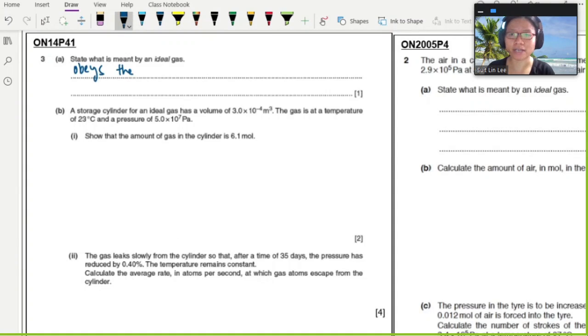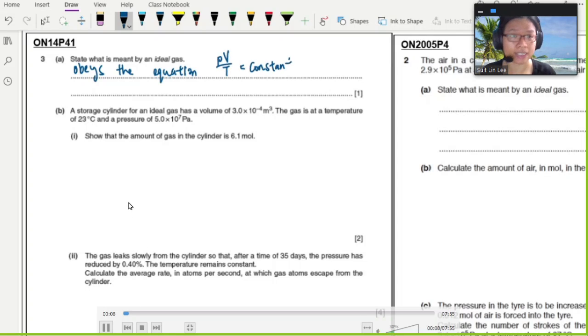Part A: state what is meant by an ideal gas. An ideal gas is any gas that obeys the equation PV/T = constant.